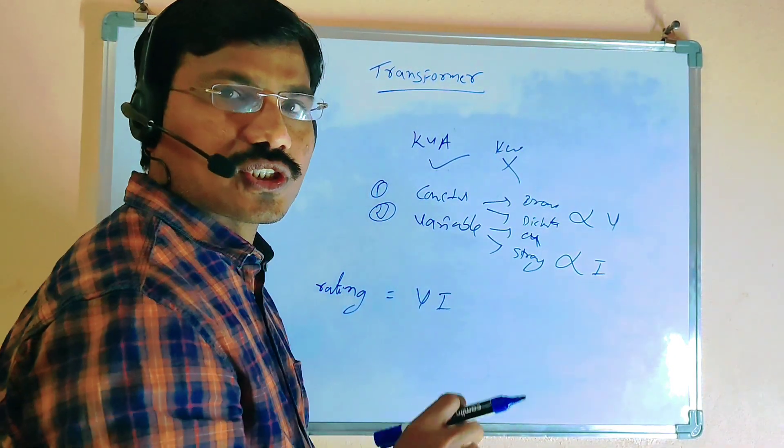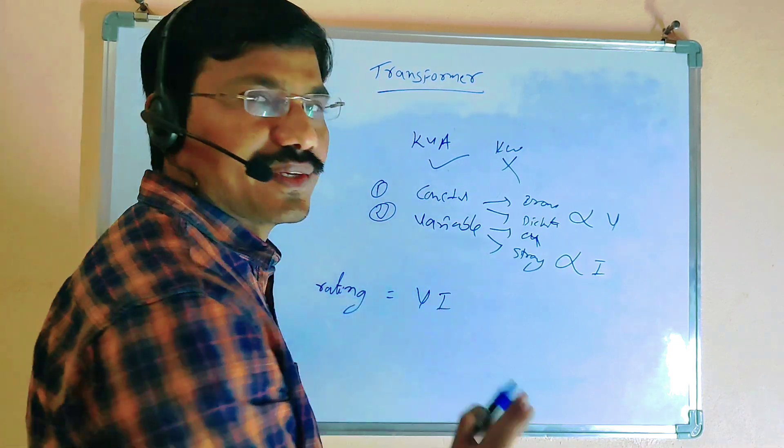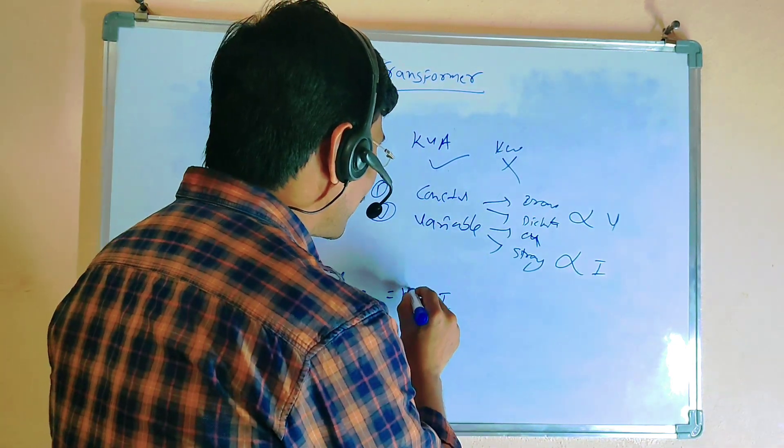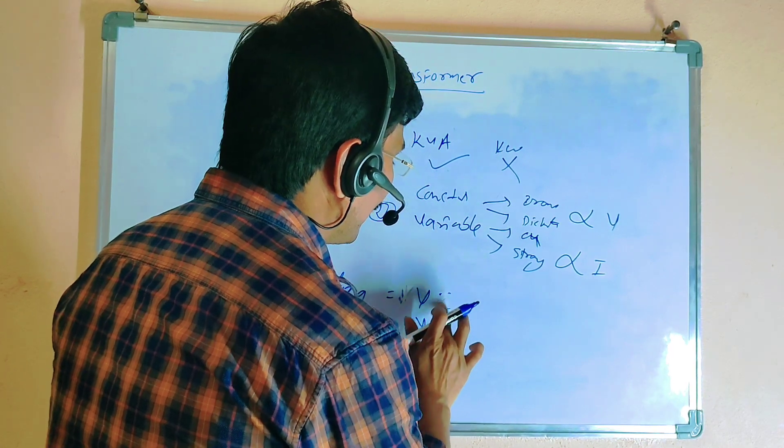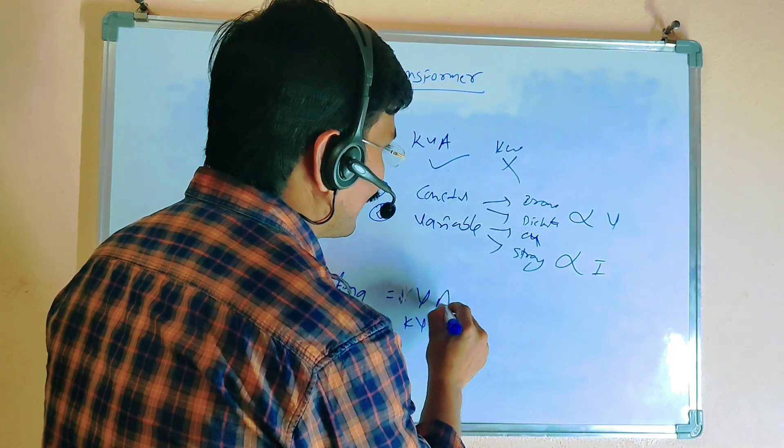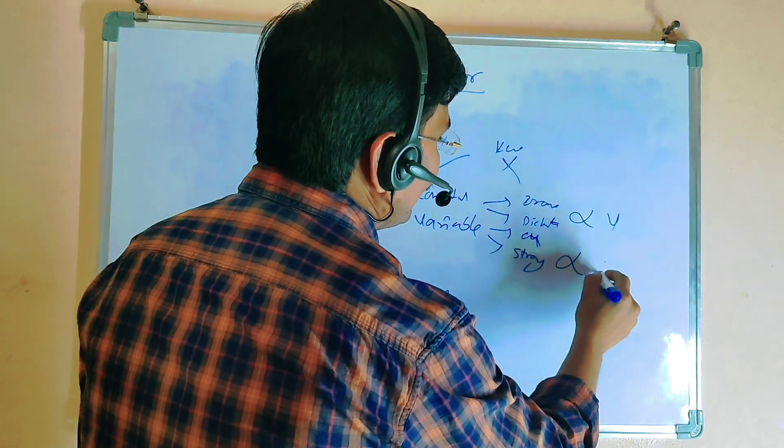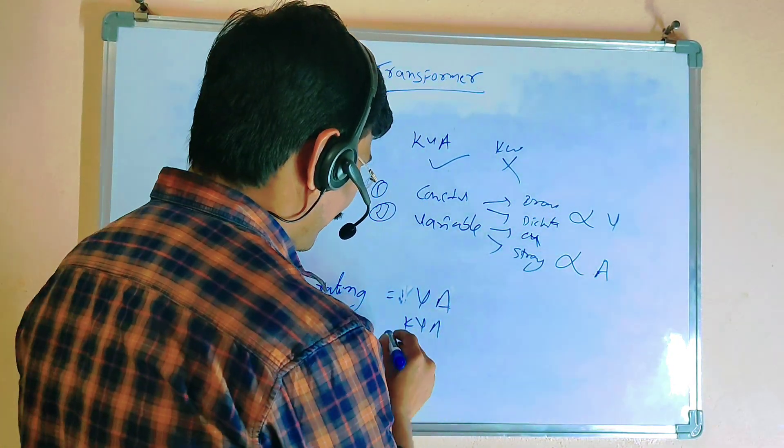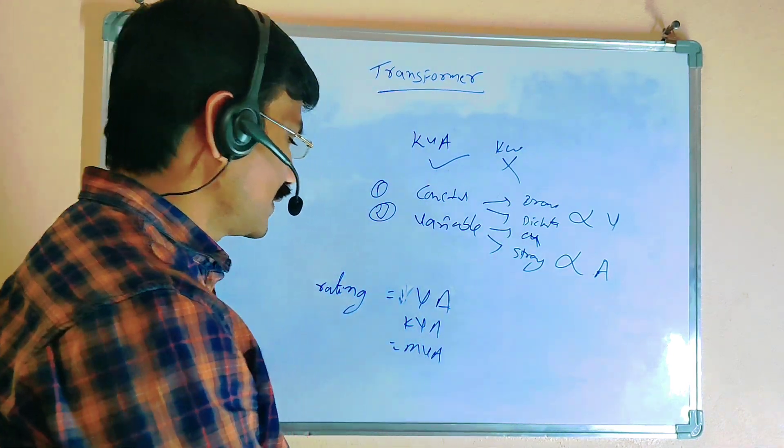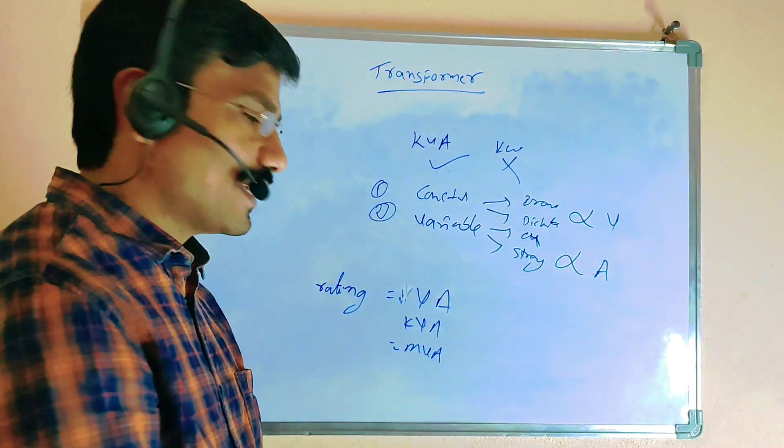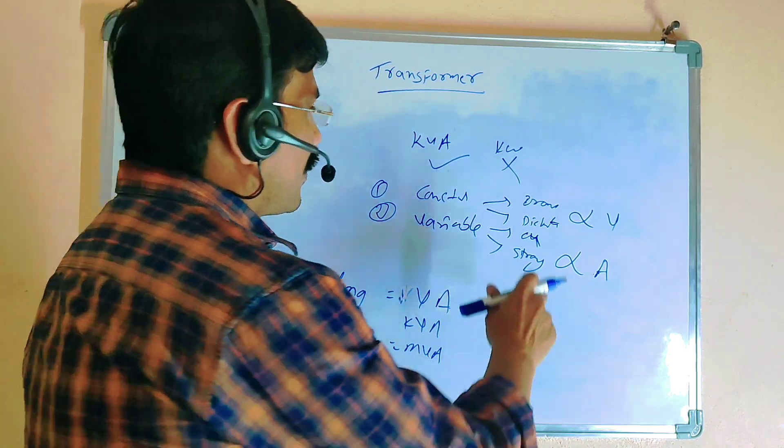If it is small range, VA. If it is medium range, KVA. If it is heavy range, MVA.